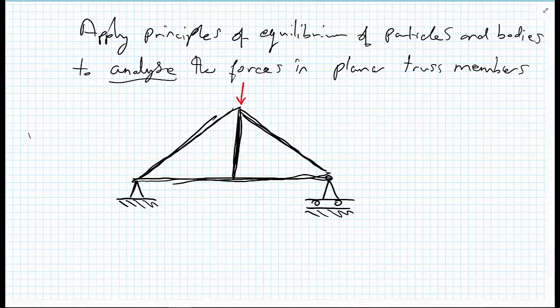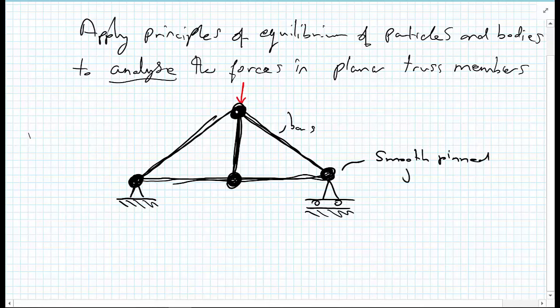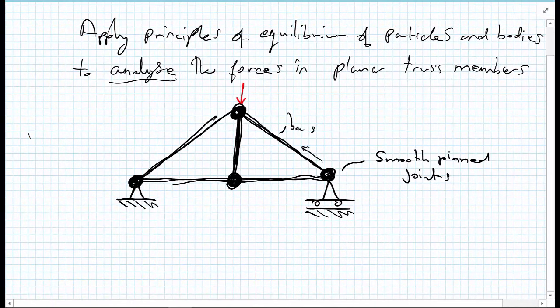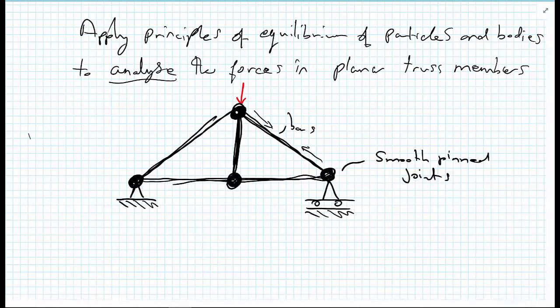Now we're going to define a little bit more precisely. So at the ends of every one of these bars, we're going to have a joint. Even this intersection here, there will be a joint. And we're going to say that each of these joints, where the members are joined together, are what we call smooth-pinned joints. What this means is that there is no friction between the joints of the members. And therefore, as a consequence of that, all of the forces can only travel actually down the bars. We can't get any rotation in the bars, and therefore, we won't get any bending of the bars.